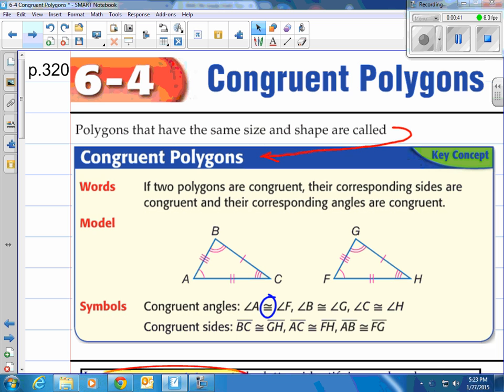So in words, if two polygons are congruent, their corresponding sides are congruent and their corresponding angles are congruent. We designate that in a picture by using arcs for angles and tick marks for sides. For instance, you see A here has one arc, so does F, so we would say that angle A is congruent to angle F.